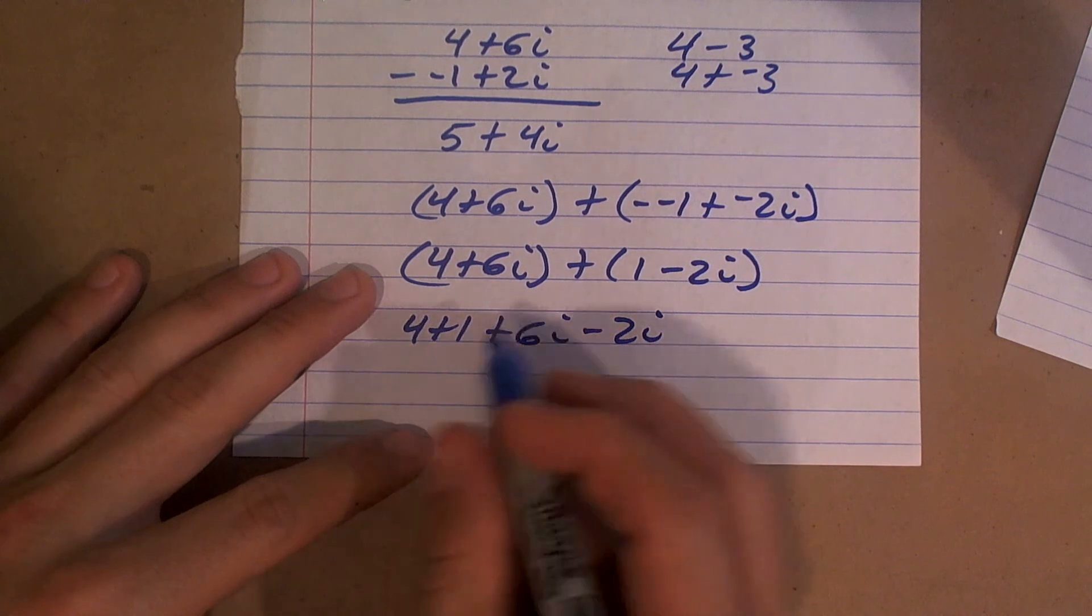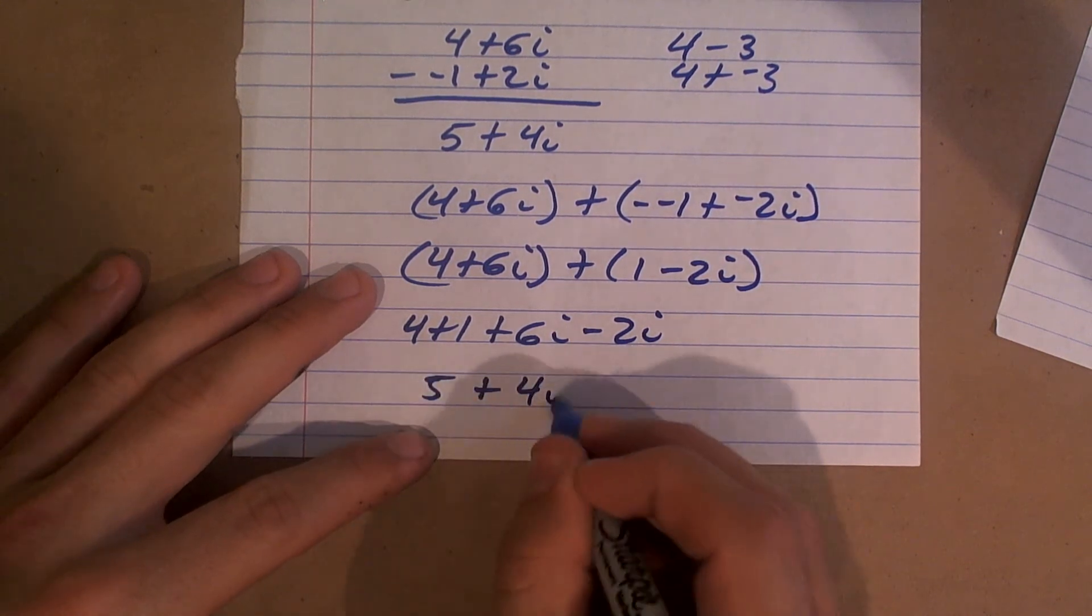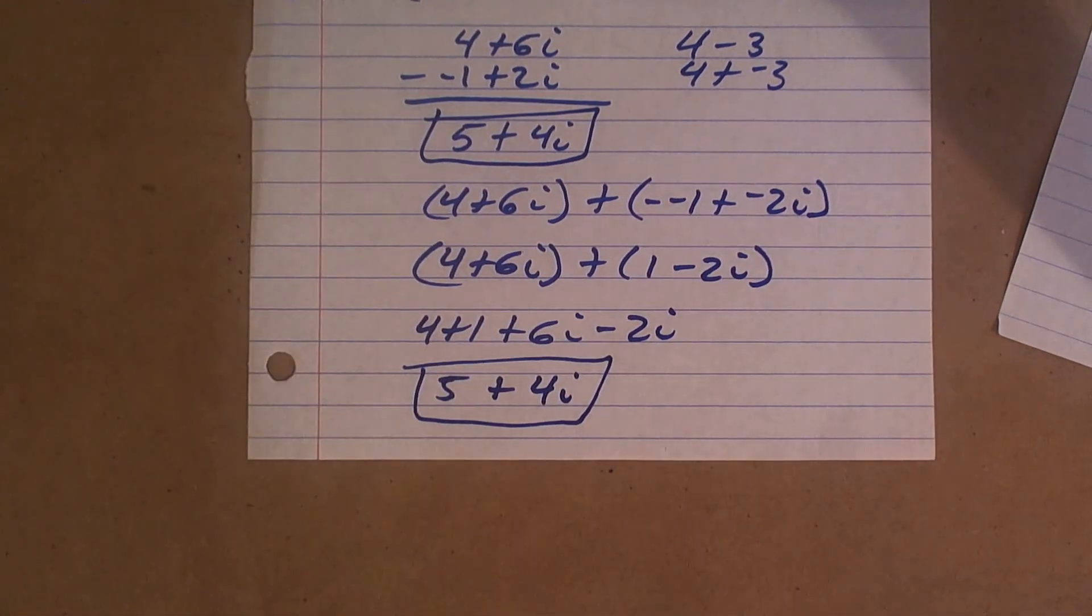Because those are your like terms. So we can rearrange it to get 5 plus 4i. And what you notice is, either way you do it, you get the exact same answer.